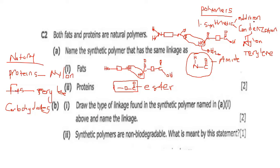Now let's answer the C2 questions. The synthetic polymer with the same linkage as fats is terylene (ester linkage). The synthetic polymer with the same linkage as proteins is nylon (amide linkage). For the drawing of the linkage found in the synthetic polymer for fats, draw the ester linkage. Non-biodegradable means that synthetic polymers cannot be decomposed by bacteria.